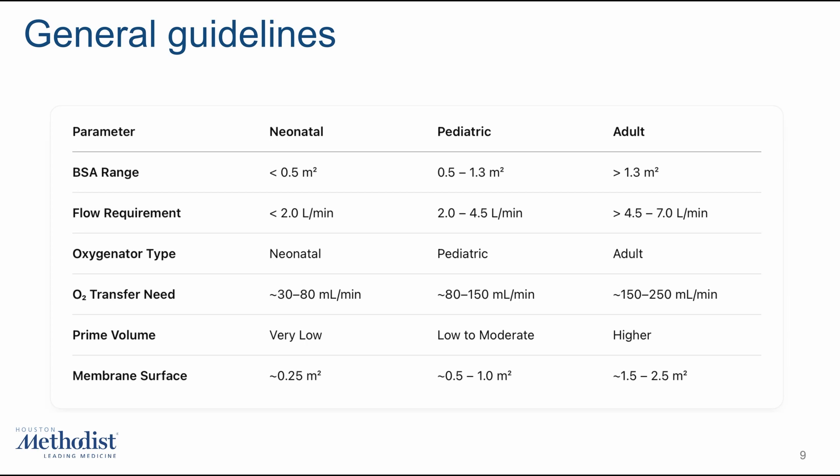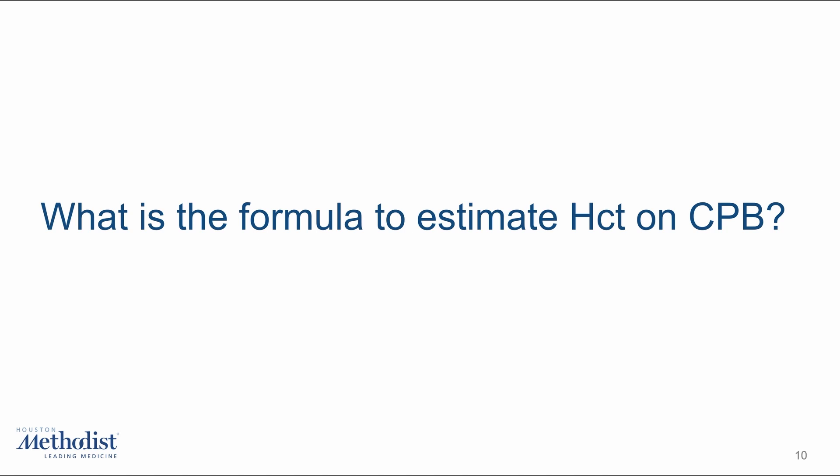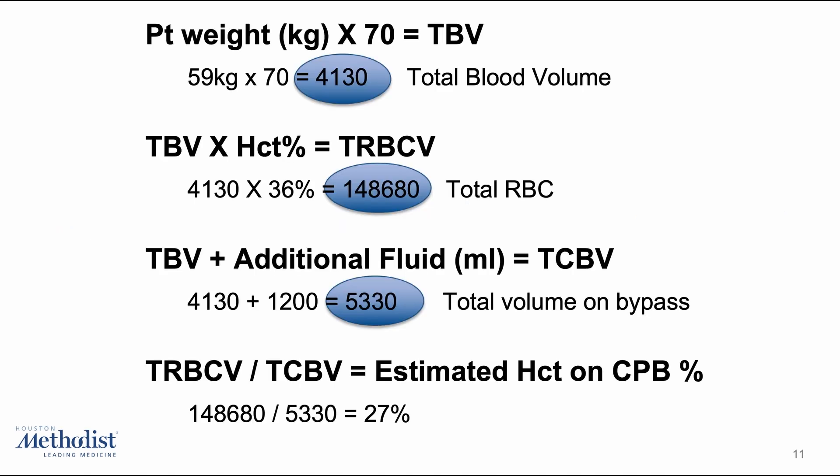Always cross-reference with the manufacturer's specs to confirm you are within safe and effective operating ranges. Now let's walk through a quick calculation for hematocrit on bypass. Start by estimating total blood volume — the patient's weight in kilograms multiplied by 70. Then calculate the total red blood cell volume (TRBCV) using the pre-bypass hematocrit. Add in your priming volume, say 1200 mL, and then divide TRBCV by total volume to estimate hematocrit on bypass. After going on pump, the hematocrit would drop to about 27% due to dilution.